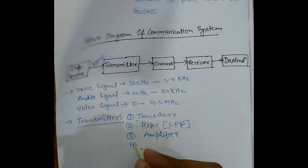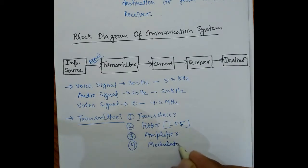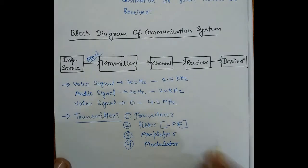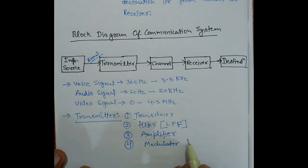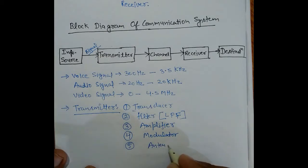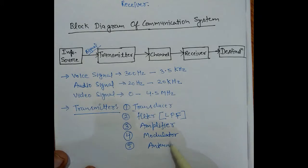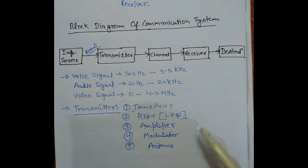After that, we use a modulator. The modulator takes our low frequency message signal and converts it onto a high frequency signal. After that, we use an antenna in the transmitter. The antenna transmits the high frequency signal after modulation into the channel.